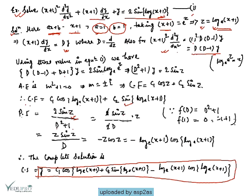Since the denominator becomes zero, we differentiate: PI = 2sinz / (D²+1) becomes z·sinz after applying the failure rule (differentiating the denominator: 2D evaluated at 1 gives 2). Then (1/D)sinz = −cosz, so PI = −z·cosz = −log(x+1)·cos(log(x+1)).